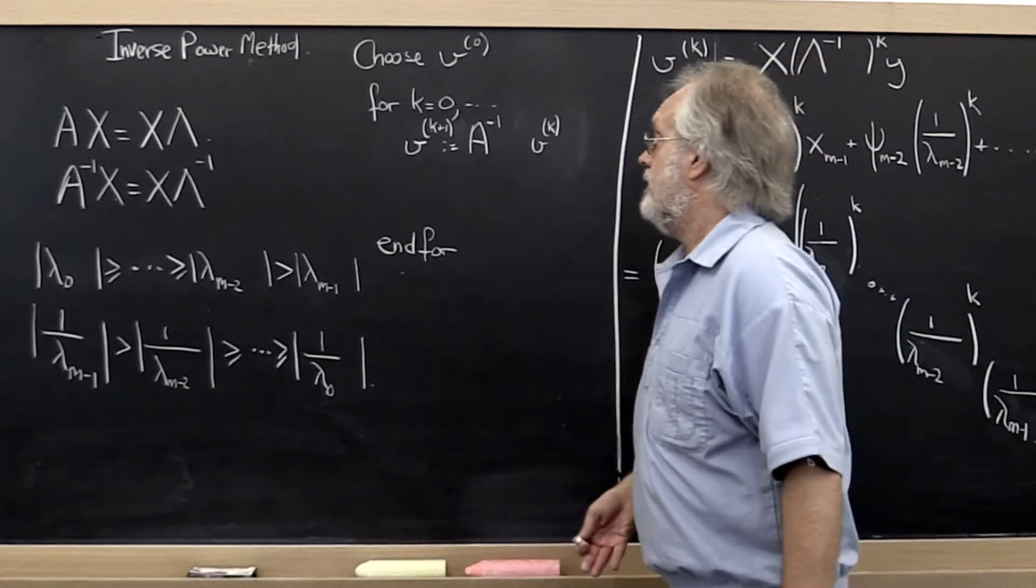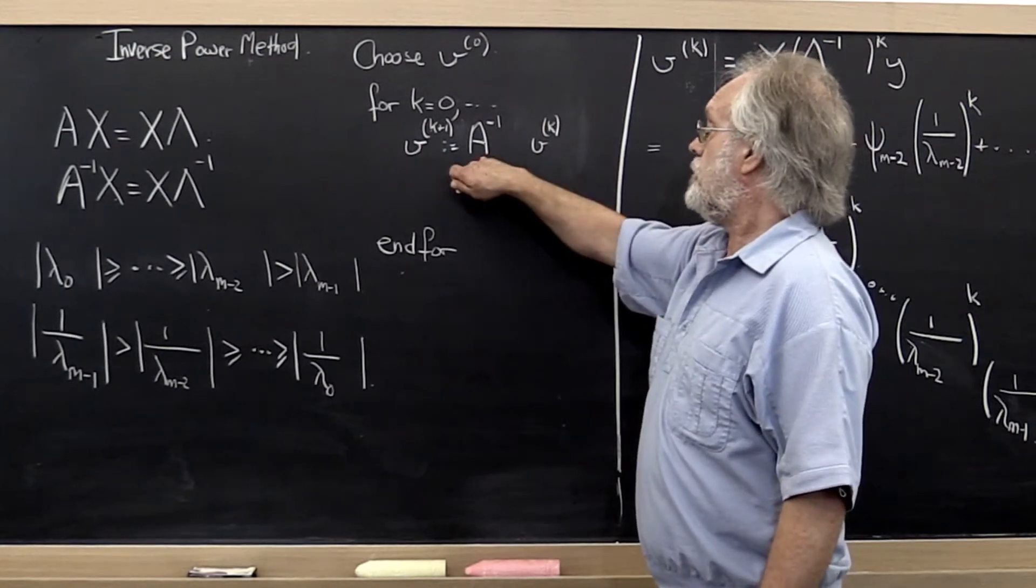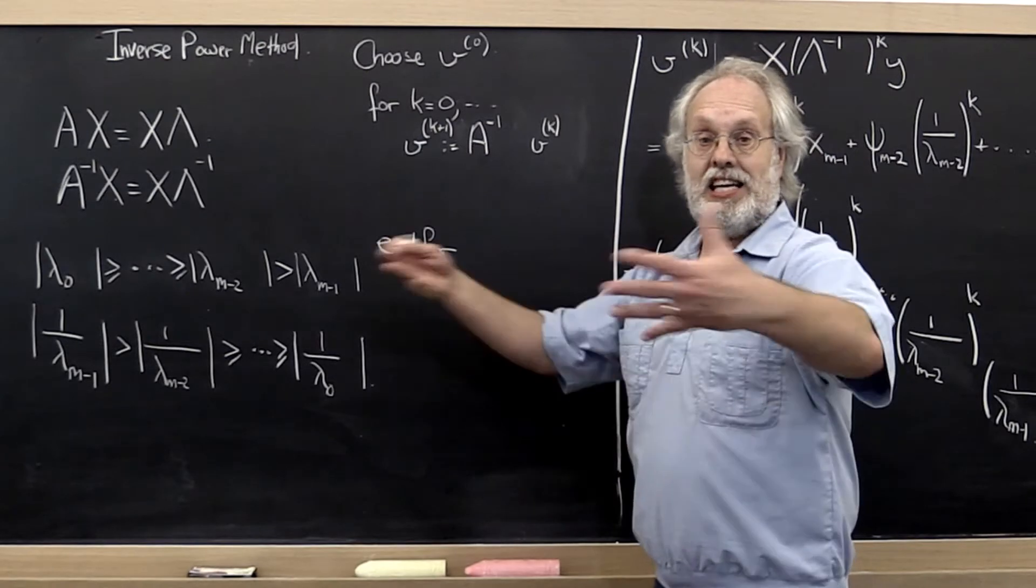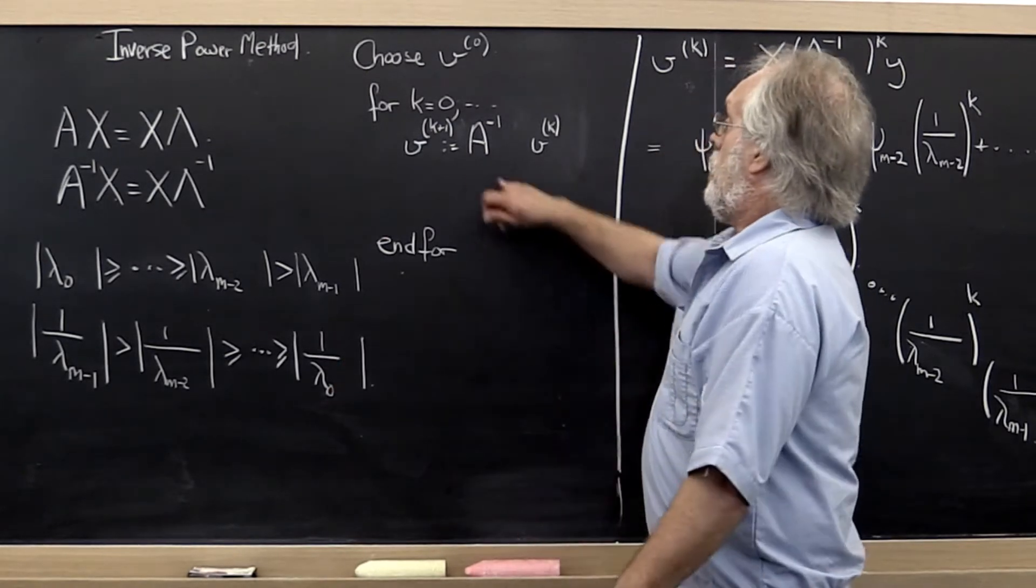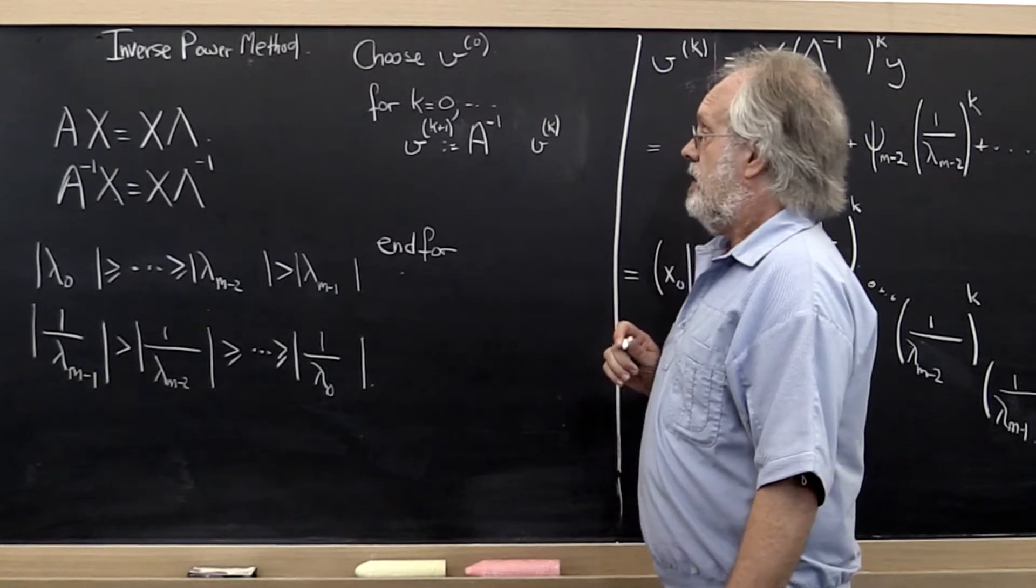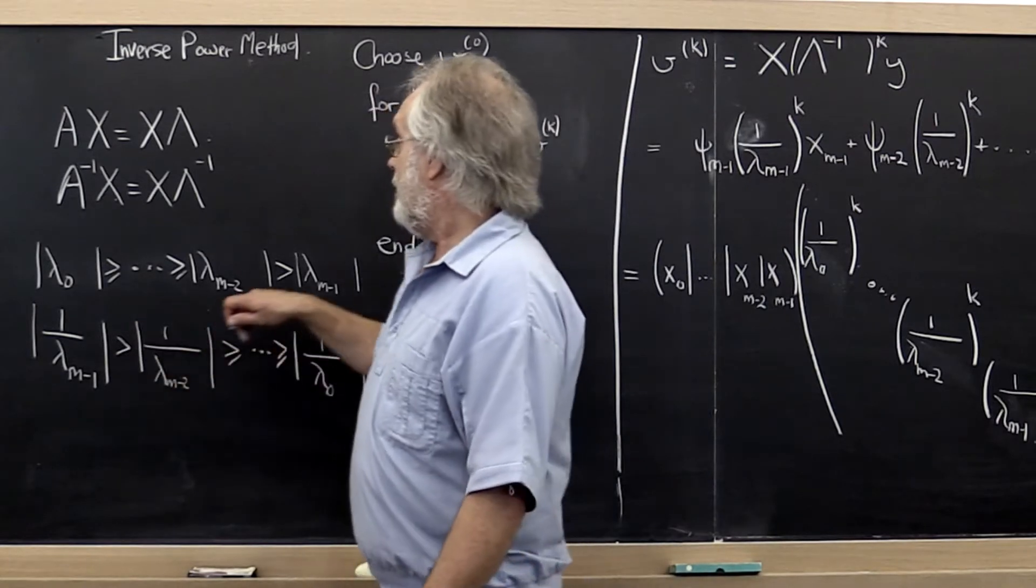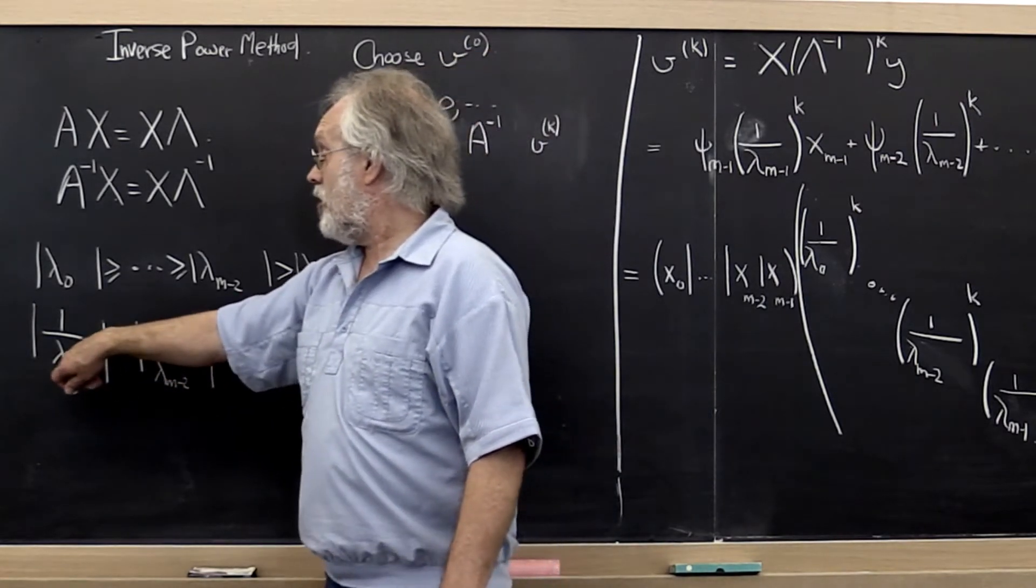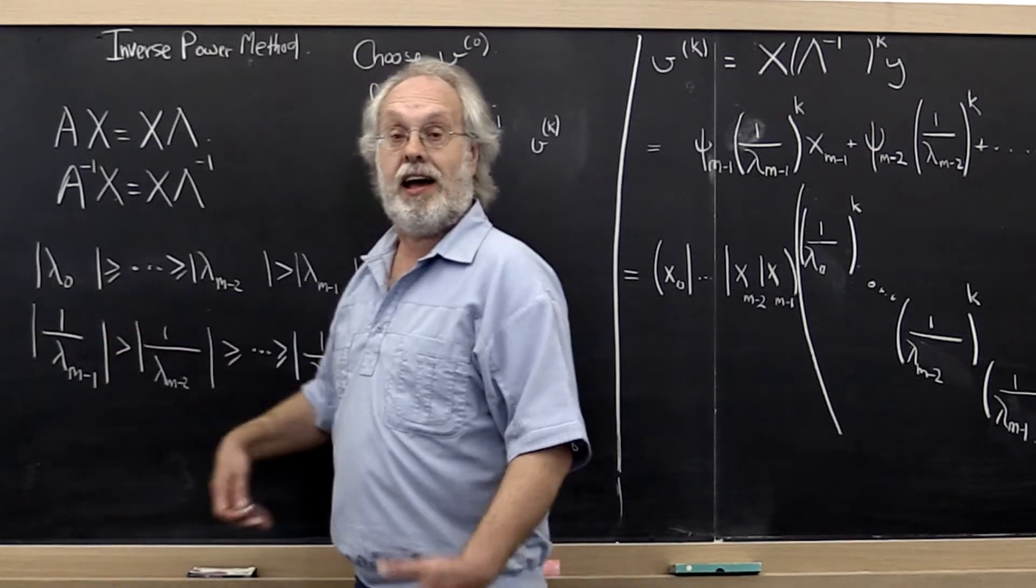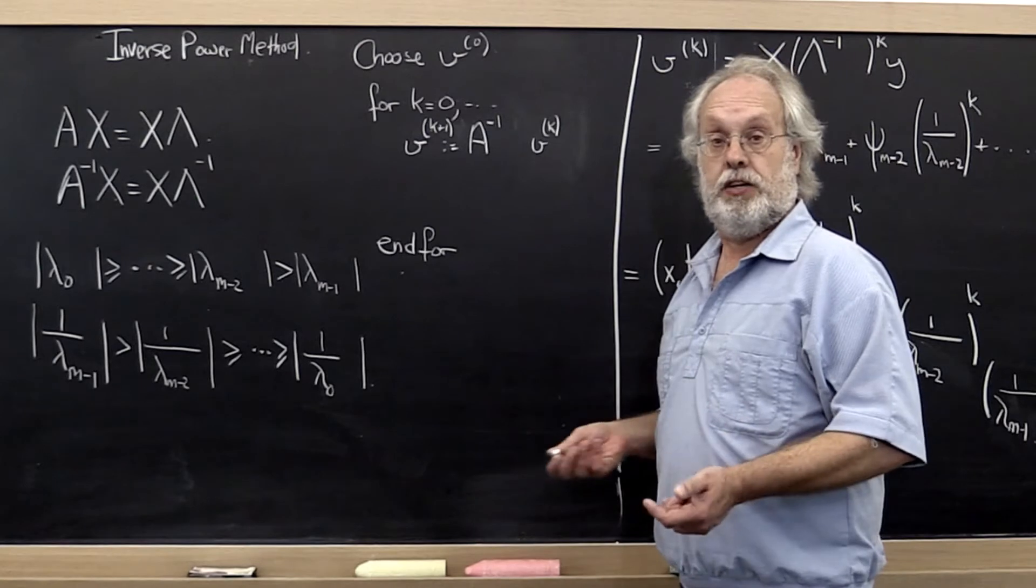Now what does that mean? Well, if we execute the power method but we do so with A inverse, then we get the exact same effect as when we iterated with matrix A, except that this time we will home in on the eigenvector associated with the largest eigenvalue of matrix A inverse, which then is the eigenvector associated with the smallest eigenvalue of matrix A.